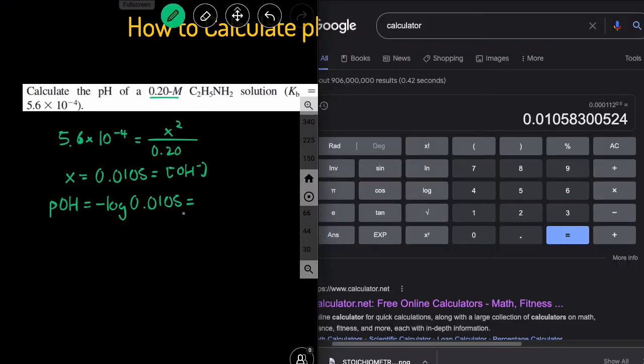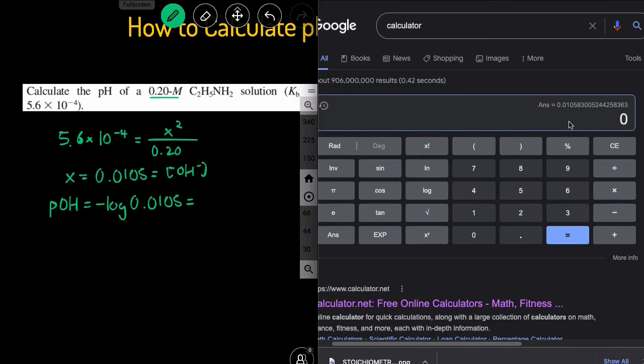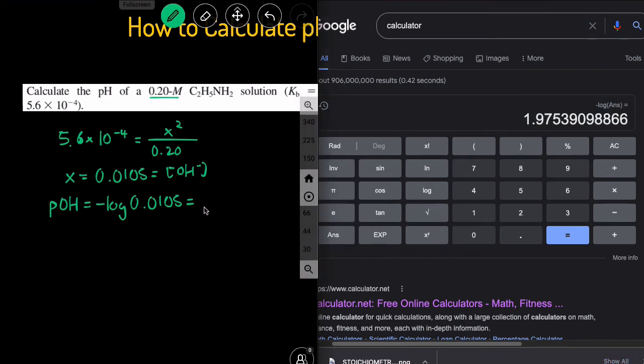Let's go back to the calculator. We're going to do negative log of the answer that we got, the 0.0105. And that gives us our pOH, which is 1.98.